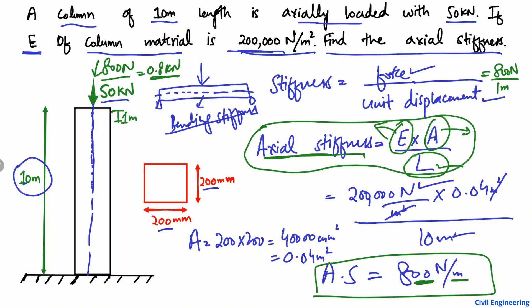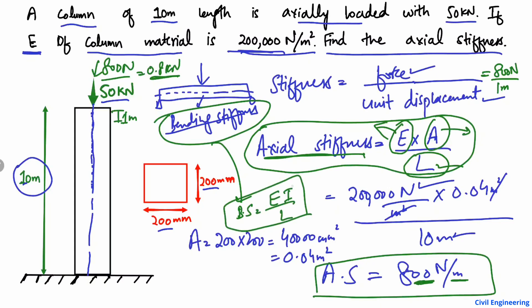You can also find the bending stiffness of a beam using the formula: E × I divided by L, where I is the second moment of inertia of the beam, E is the elasticity, and L is the length. For bending stiffness, a separate video is available on this channel.